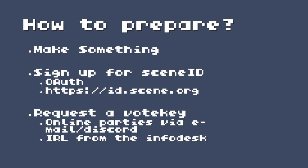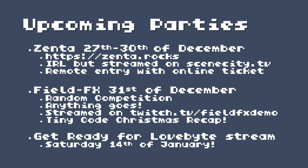How do you prepare for a competition? Make something - that's the hard part, but the most rewarding. Sign up for Scene ID, which is an OAuth provider that allows you to log into all the scene websites with one ID. Some parties use this to sign into the party system; others still use vote keys. A vote key is a way of making sure you only vote once - you request these either online or when you show up to the party in person at the info desk, then create your account using that.